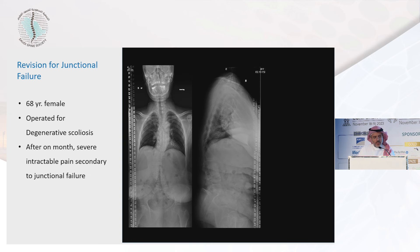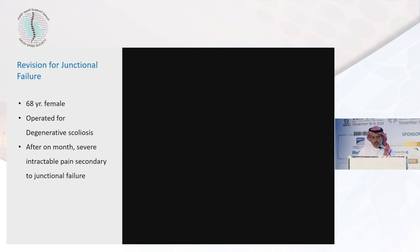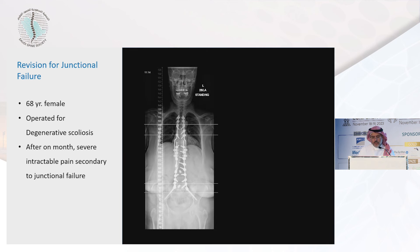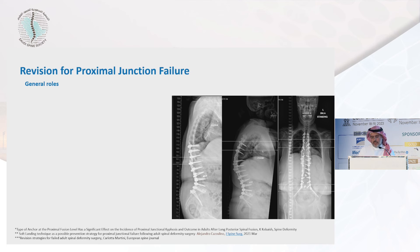Consider this patient: 68 years old, operated for degenerative scoliosis. Within a month or even three weeks, she presented with junctional failure. Looking at the proximal screws, they are penetrating the end plate, and she came with severe pain. We took her to the OR and revised her.